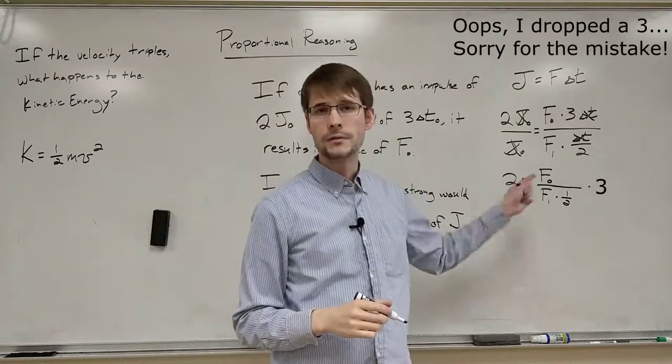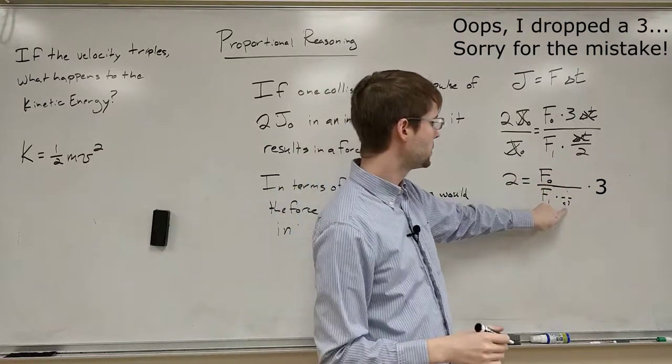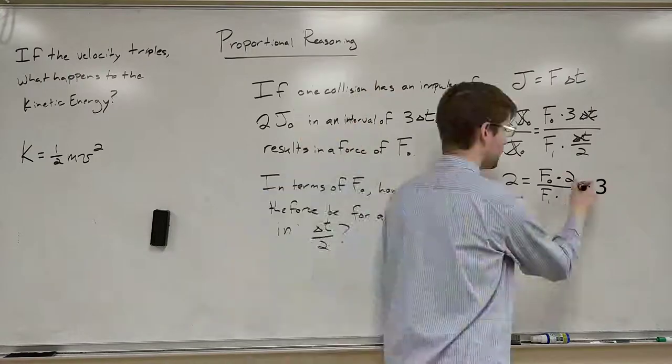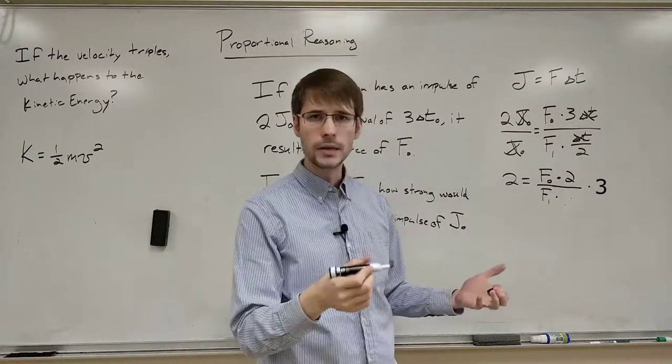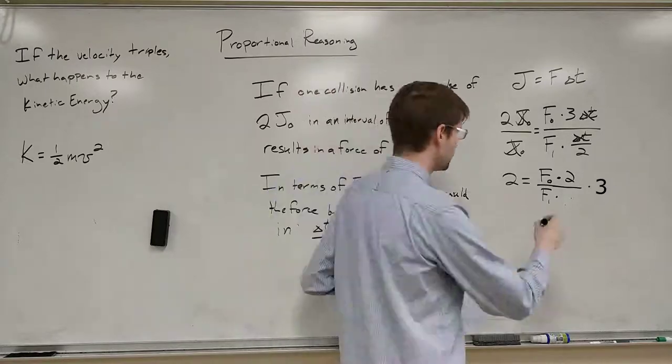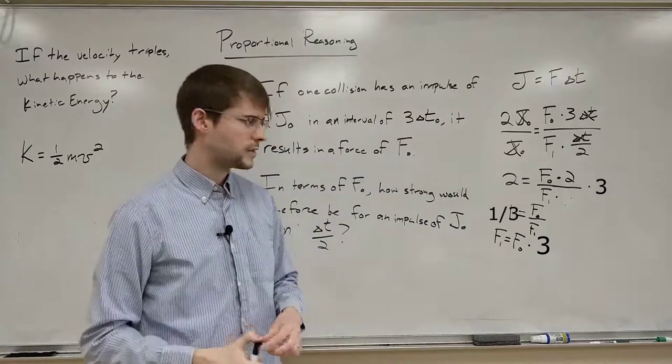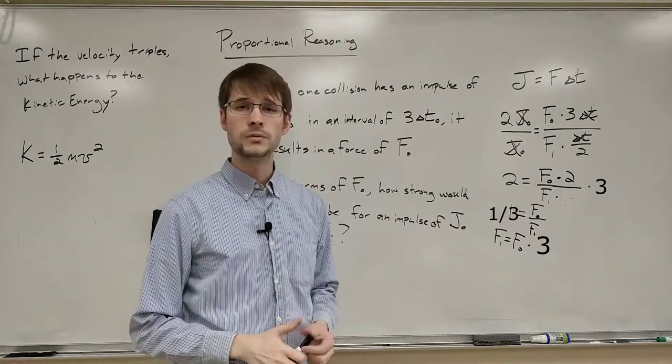Alright, so now we've got a fraction in the denominator. We remember we're going to flip that guy and multiply. We wind up with this being equal to 2 on the top. And now if we divide both sides by 2, or if we cross multiply, if we keep simplifying this down. We actually get that f1 is equal to f0 times 3 in this case.